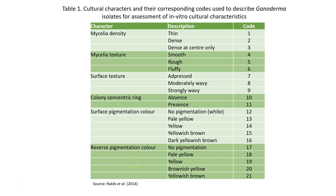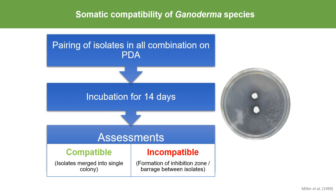The in vitro morphology characteristics observed were: mycelia density, mycelia texture, surface texture, colony concentric ring, surface pigmentation color, and reverse pigmentation color. Colors were recorded based on color codes. For somatic compatibility, all isolates were paired in all possible combinations, placed onto PDA approximately 2 cm apart, and assessed after 14 days. If compatible, the isolates merge into a single colony. If incompatible, an inhibition zone or barrage forms between the isolates.